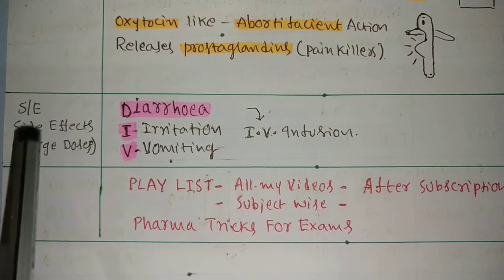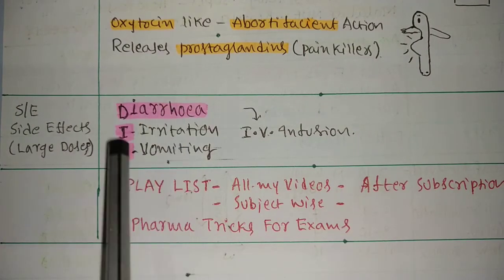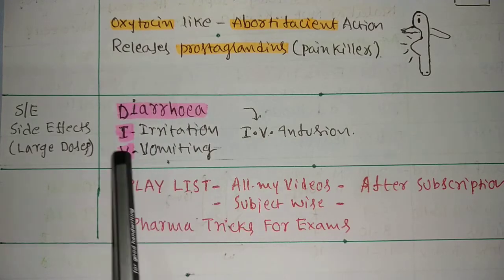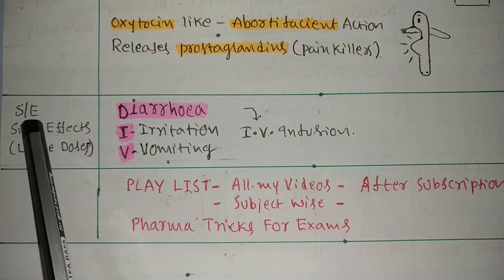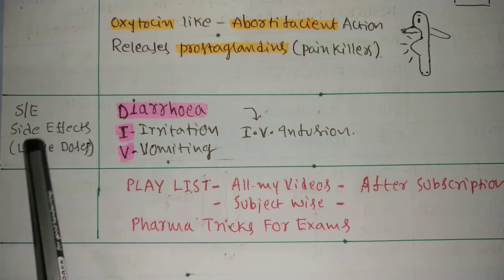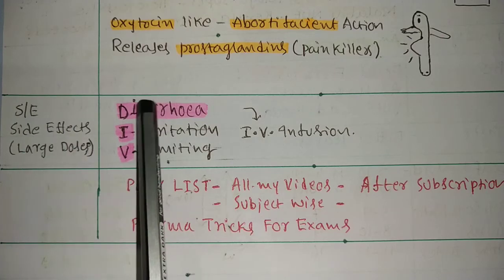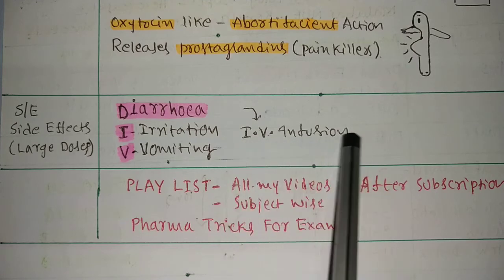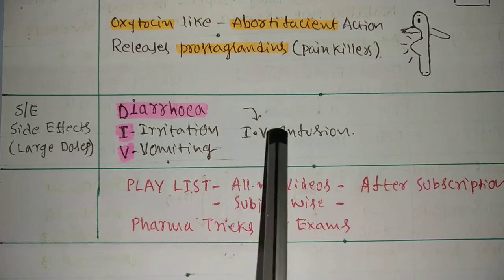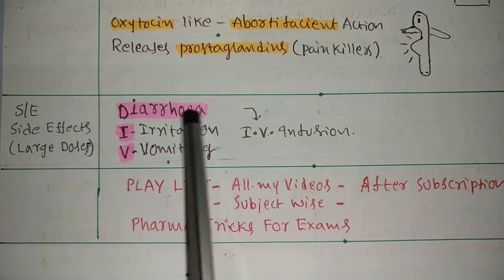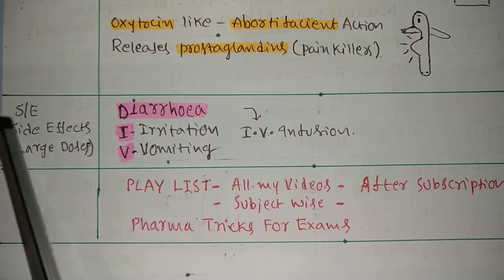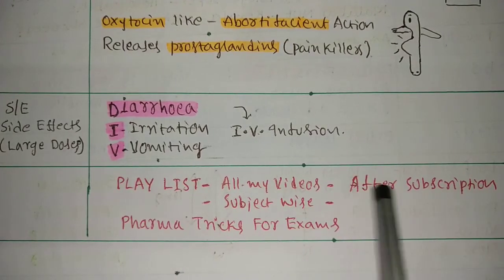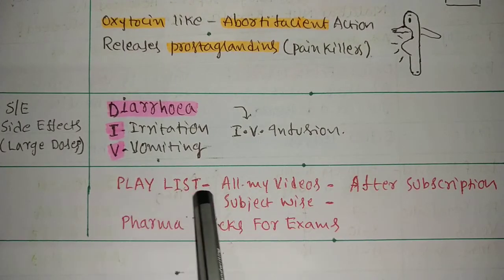And side effects: it has side effects - diarrhea, irritation, vomiting. How to remember this? If you are taking Vasaka in large dose, side effects will come. Diarrhea will come. When diarrhea comes, you have to use IV infusion. Doctor will give you IV infusion. IV - diarrhea, IV infusion. These are the side effects.